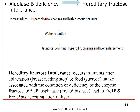Aldolase B deficiency is the basis of hereditary fructose intolerance. The accumulation of fructose 1-phosphate increases osmotic pressure and water retention, resulting in jaundice, vomiting, hyperuricemia, and liver enlargement.